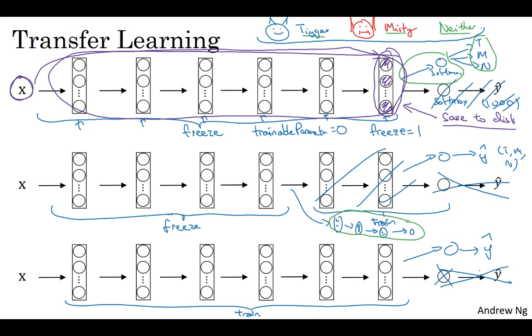But the more labeled data you have for your task, so the more pictures you have of Tigger, Misty, and neither, the more layers you could train. And in the extreme case, you could use the weights you download just as initialization, so they would replace random initialization, and then you could do gradient descent training, updating all the weights and all the layers of the network.